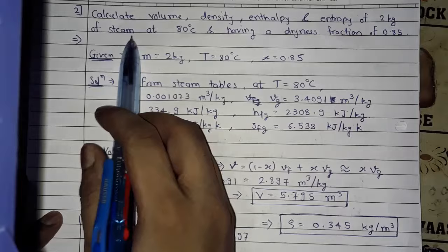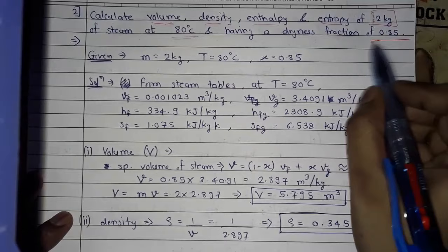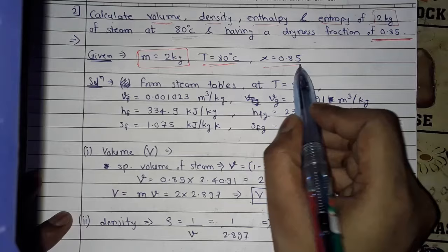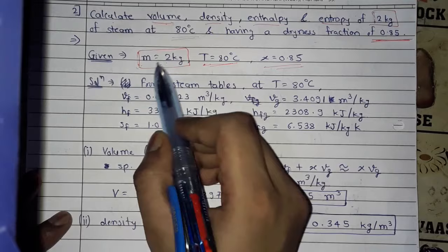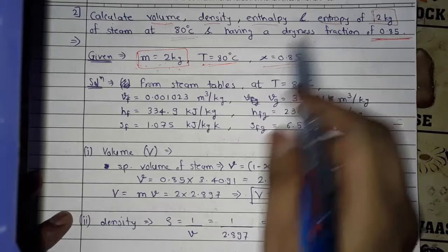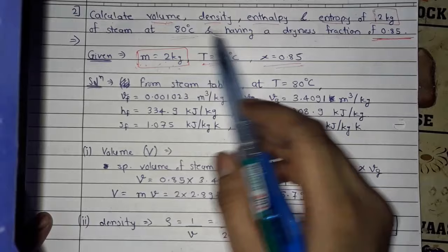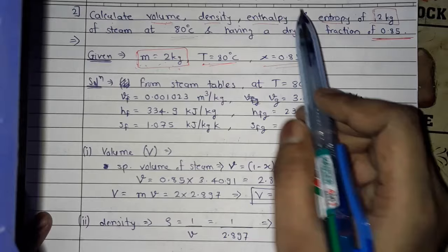Next problem: calculate volume, density, enthalpy, and entropy of 2 kg of steam at 80°C having dryness fraction 0.85. Given: mass = 2 kg, temperature = 80°C, x = 0.85. Since mass is given and not unity, we first calculate specific properties using steam table values, then scale to get volume, density, enthalpy, and entropy.